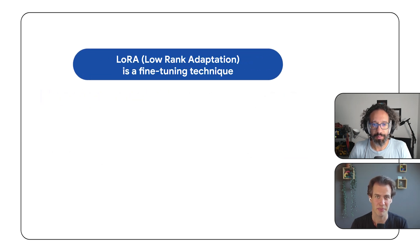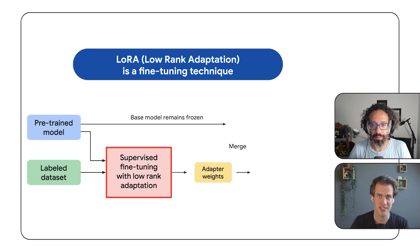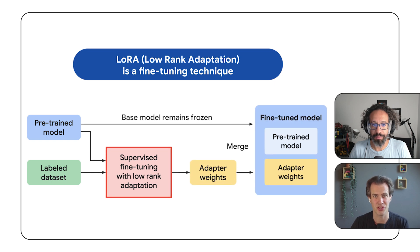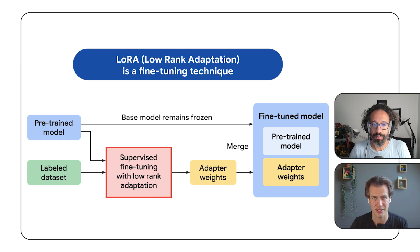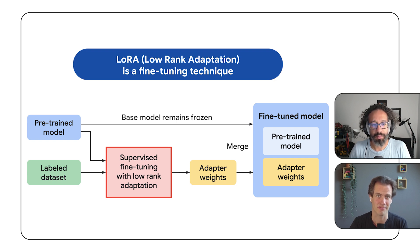Low-rank adaptation, or LoRa, is a fine-tuning technique used to adapt a base model to specific tasks without retraining the entire model. LoRa introduces small adapter layers that are trained on a targeted dataset while the original base model remains frozen.